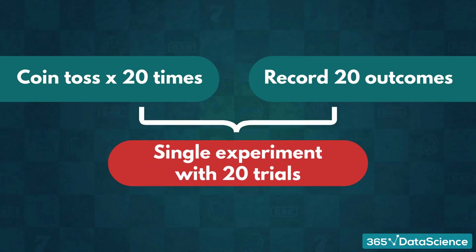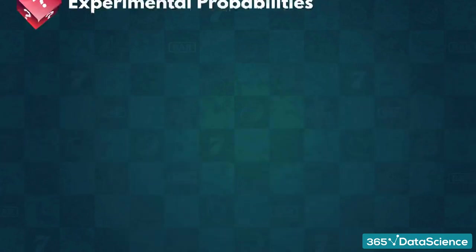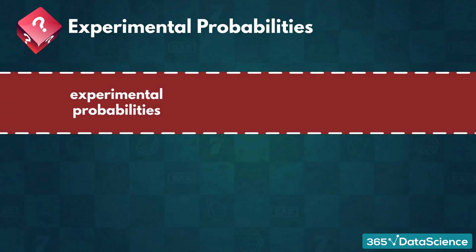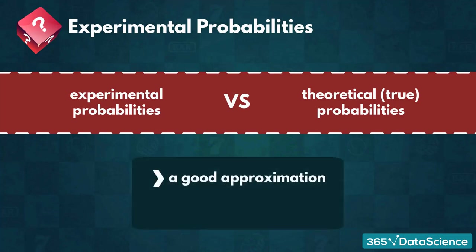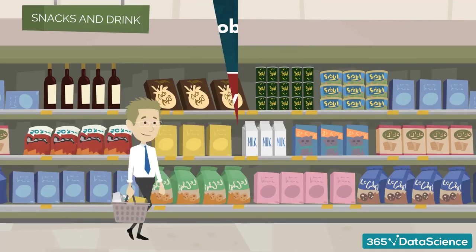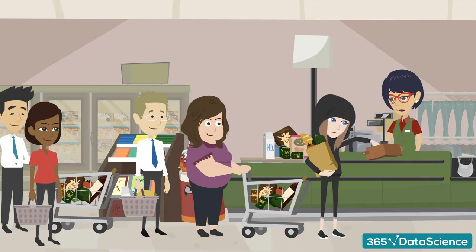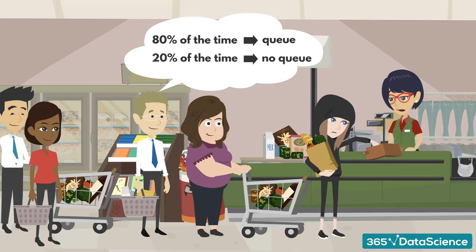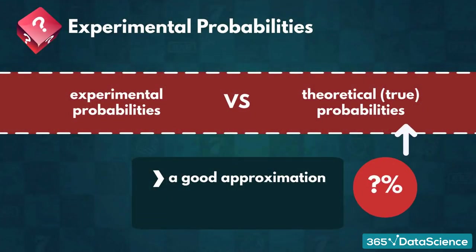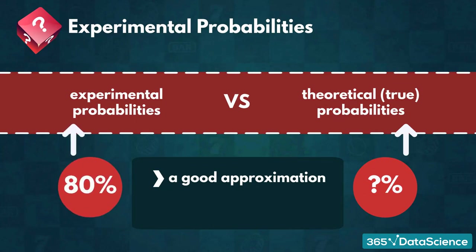The probabilities we get after conducting experiments are called experimental probabilities, whereas the ones we introduced earlier were theoretical or true probabilities. Generally, when we are uncertain what the true probabilities are or how to compute them, we like conducting experiments. The experimental probabilities we get are not always equal to the theoretical ones, but are a good approximation. For instance, 8 out of 10 times I go to my local shop, I have to wait in line. Based on my experience, 80% of the time there will be a queue, and 20% of the time there won't be one. The experimental probability is easy to compute and very useful.